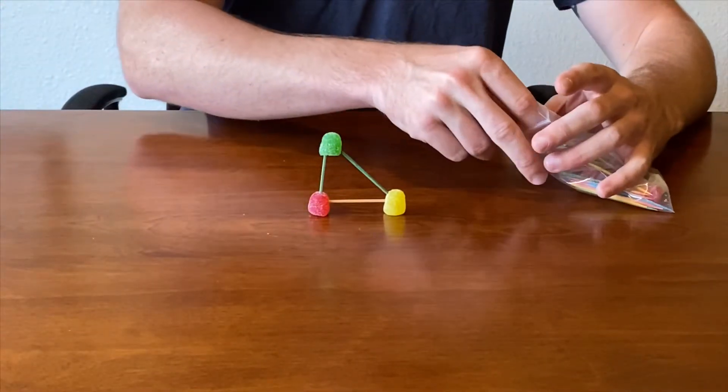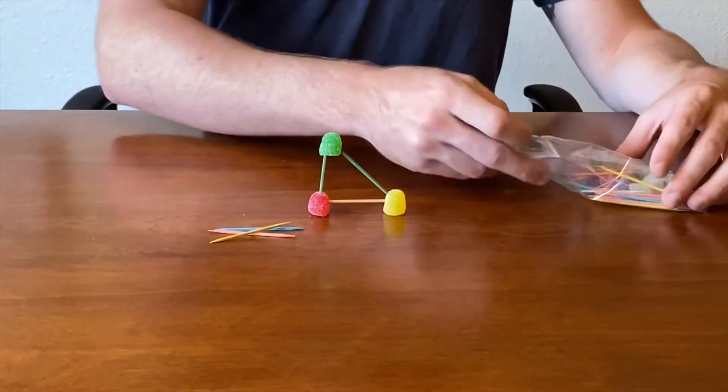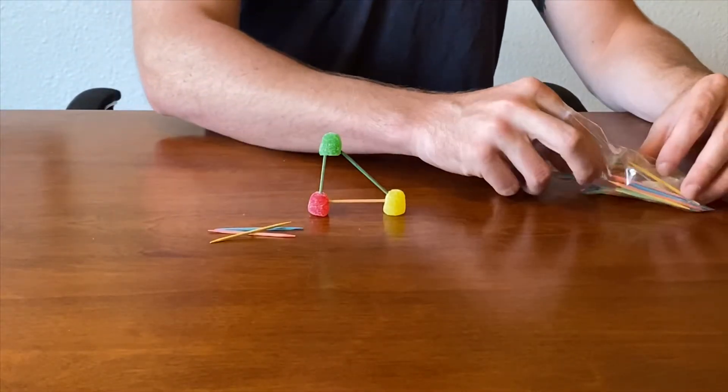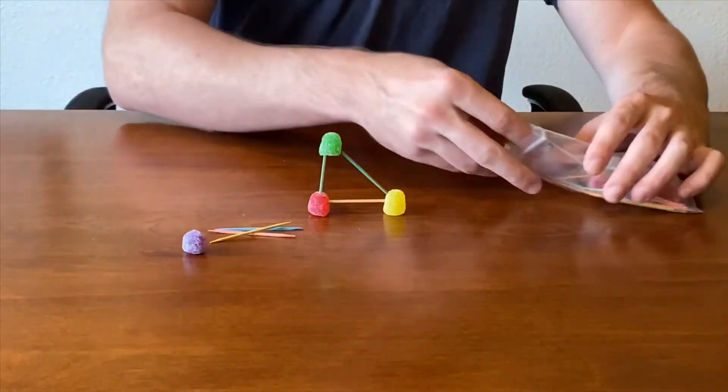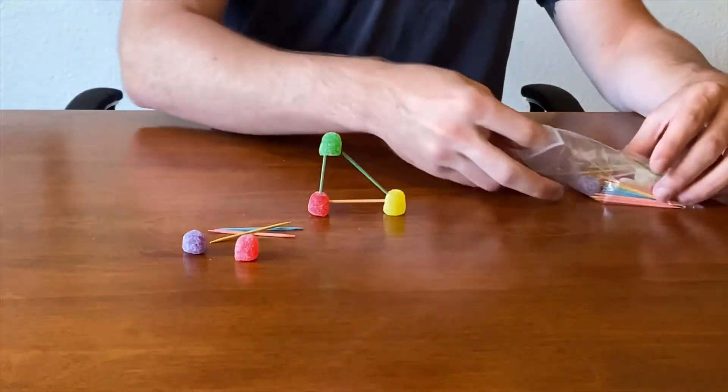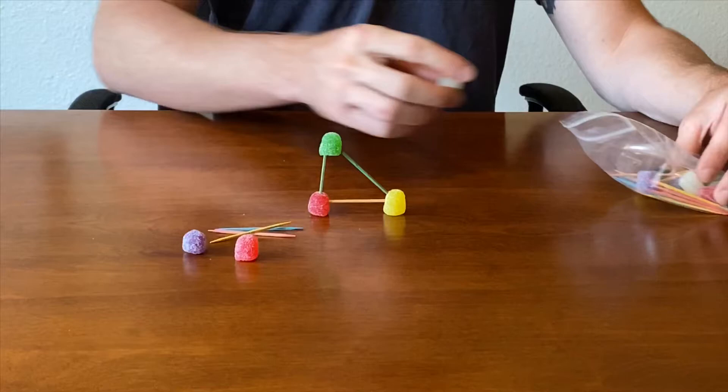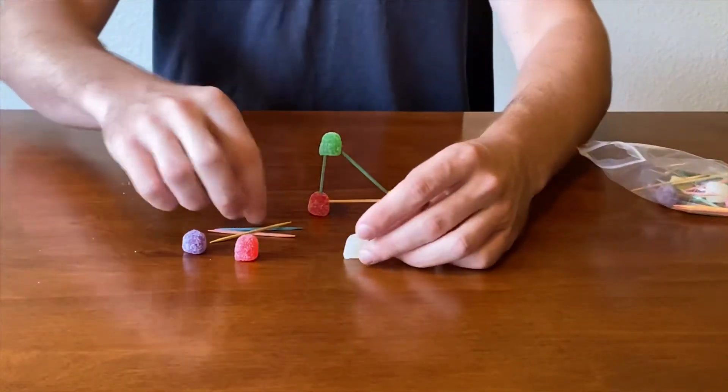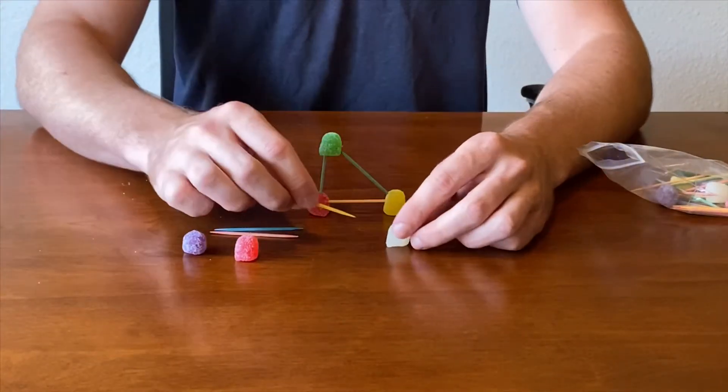Next, exact same thing. Take three more toothpicks out and then take three more gumdrops. Let's start making our triangle again.